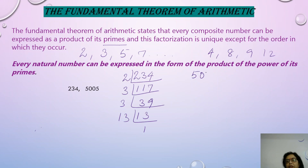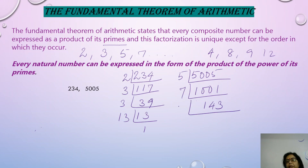If I take 5005 and take out the prime factors, this is divisible by 5, then 7, then 11, then 13. So these prime factors are unique for this particular number. These prime factors will always give us the product 5005.